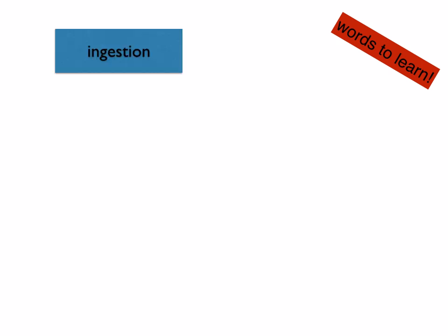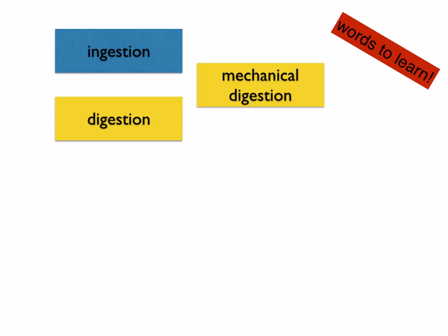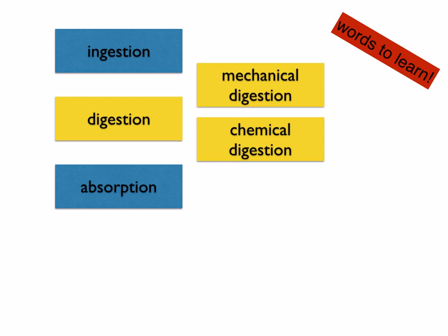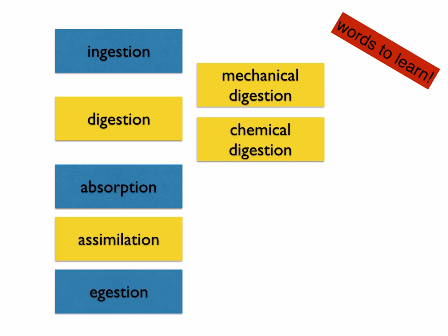Here are a few words that you need to learn. I want you to copy them down onto mini flashcards so that you remember their definitions. You've got ingestion, digestion — which includes mechanical and chemical digestion — absorption, assimilation and egestion. Press pause, copy these down onto little pieces of paper, and then we're going to have a look at them in detail so you can put the definitions on the back.